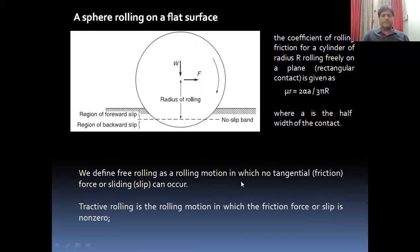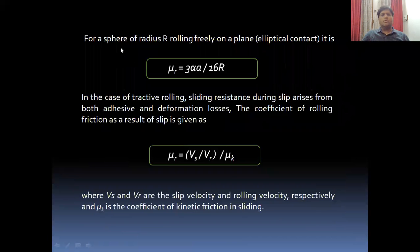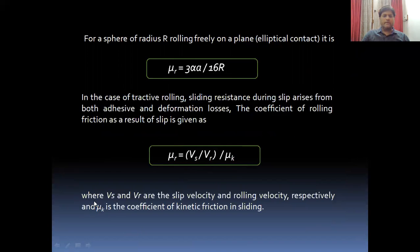The first is called free rolling, where there is no friction, tangential force, or slip. The second case is tractive rolling, in which the frictional force or slip is non-zero. For elliptical contact, the coefficient of rolling friction can be calculated using the corresponding equation. In the case of tractive rolling, the sliding resistance during slip arises from both adhesion and deformation losses, and we can use an equation where Vs and Vr are the slip velocity and rolling velocity, and μk is the coefficient of kinetic friction.